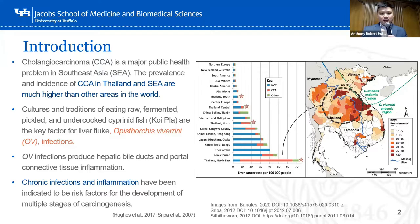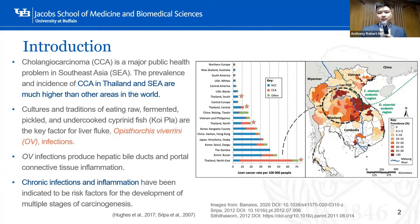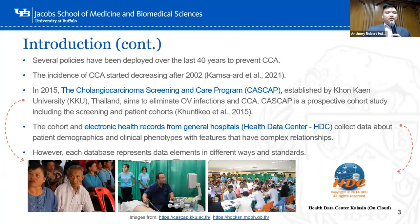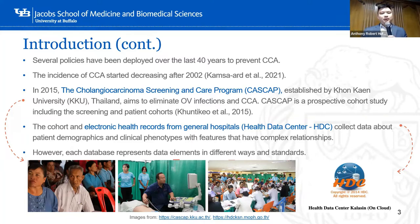If you see in this picture, the last one is the Northeast of Thailand — my hometown — where the CCA rate is very high. You can see the relationship between the CCA rate and the prevalence of OV infection highlighted in red and orange. A surveillance program has been deployed over 40 years to prevent CCA in Thailand, and the incidence of CCA started decreasing after 2002. In 2015, the Cholangiocarcinoma Screening and Care Program, CASCAP, by Khon Kaen University Thailand, aimed to eliminate OV infections and CCA. CASCAP is a prospective cohort study including a screening and patients cohort.